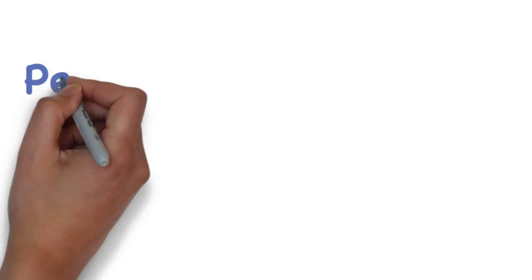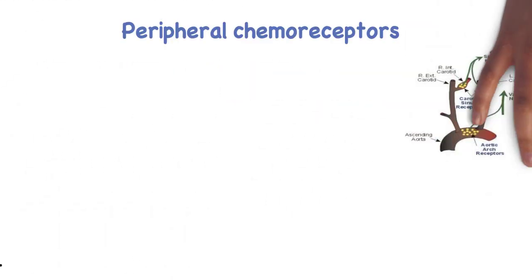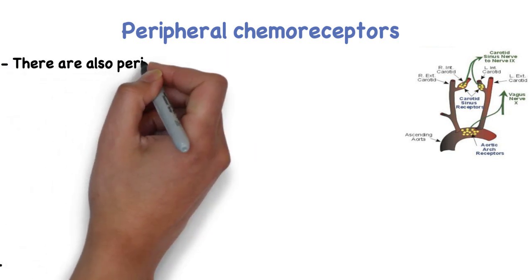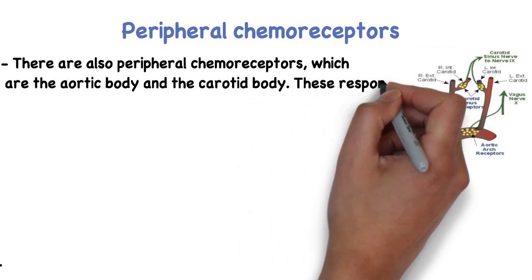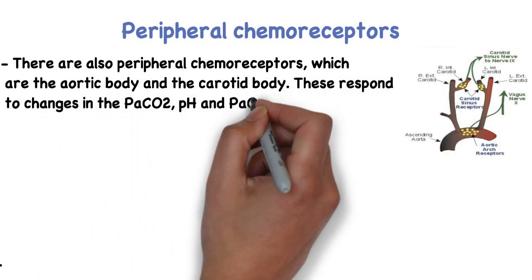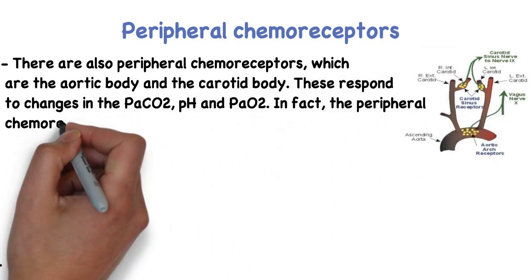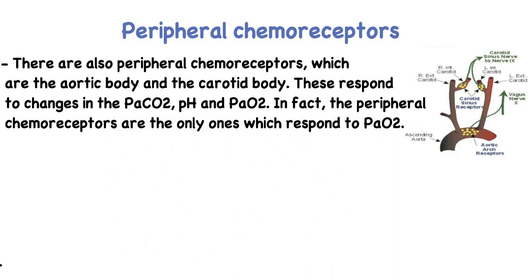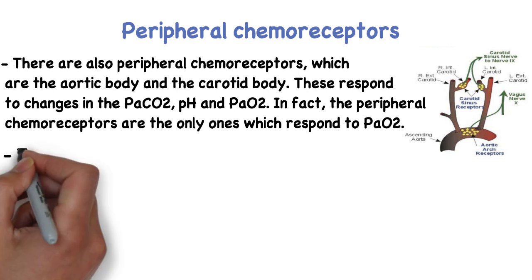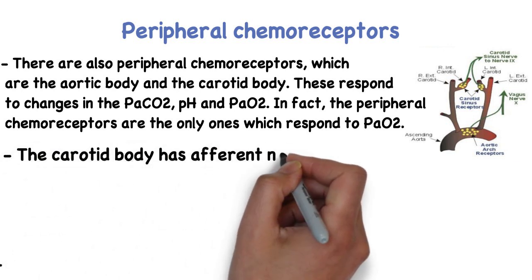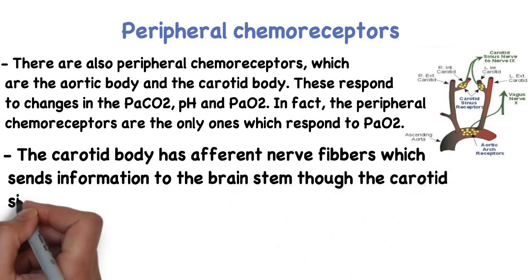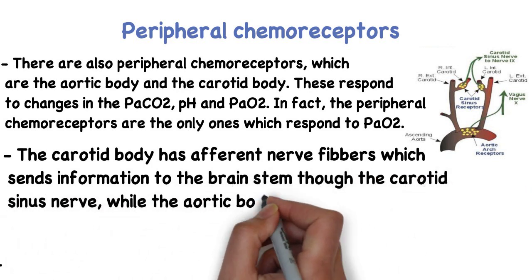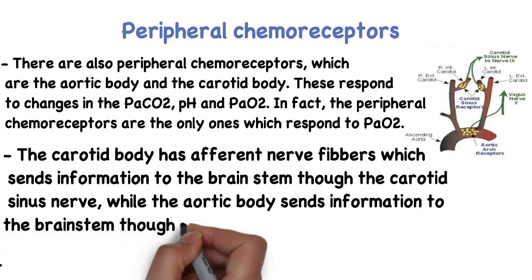There are also peripheral chemoreceptors — the aortic body and the carotid body. These respond to changes in the partial pressure of CO2, blood pH, and the partial pressure of oxygen. In fact, the peripheral chemoreceptors are the only ones which respond to the partial pressure of oxygen. The carotid body has afferent nerve fibers that send information to the brainstem through the carotid sinus nerve, while the aortic body sends information to the brainstem through the vagus nerve.